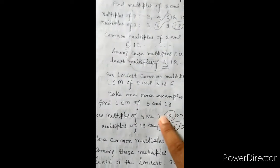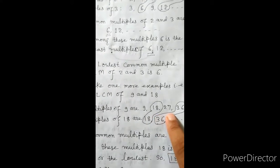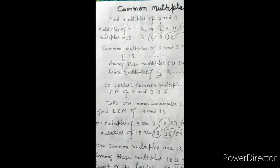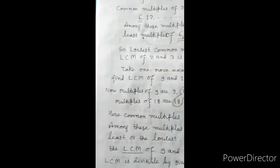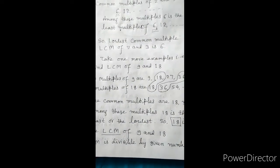Take one more example: 9 and 18. Multiples of 9 are 9, 18, 27, 36, 45 and so on. Multiples of 18 are 18, 36, 54, etc. Here, common multiples are 18, 36 and so on. Among these, 18 is the least or the lowest. So 18 is the LCM of 9 and 18.